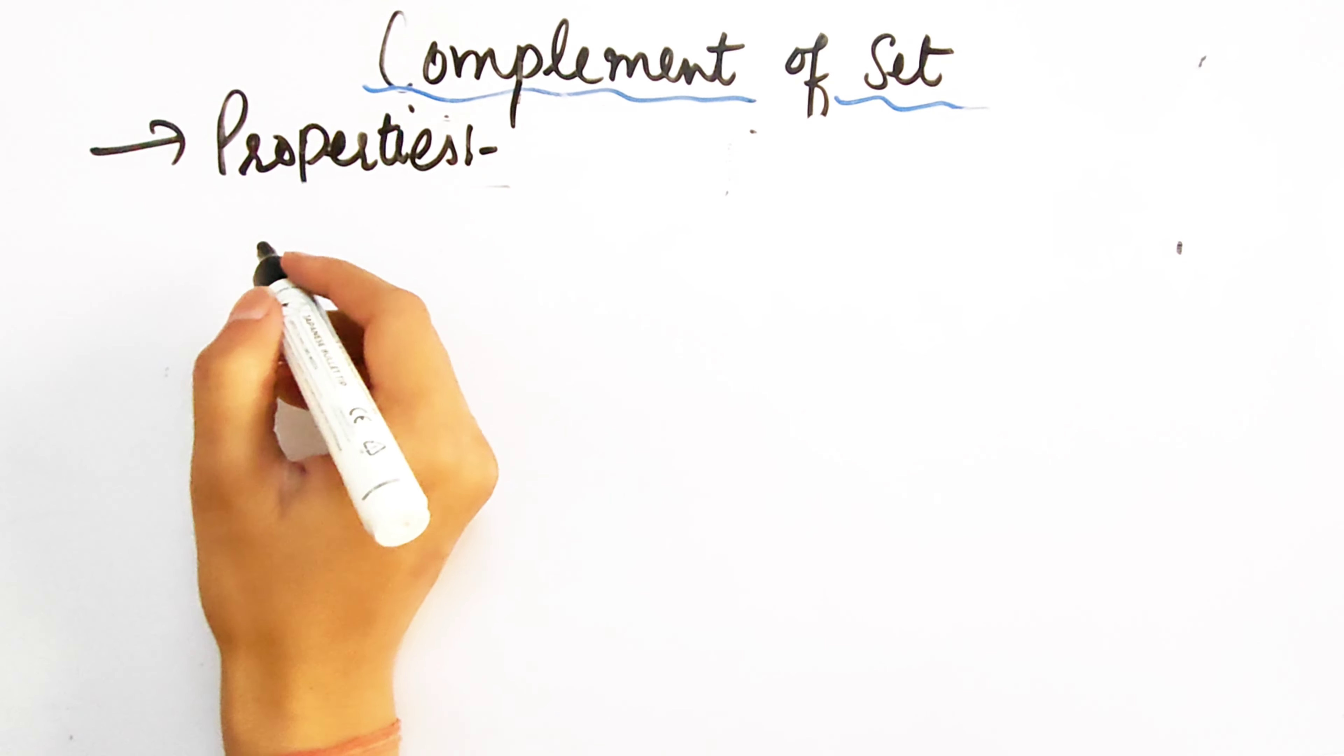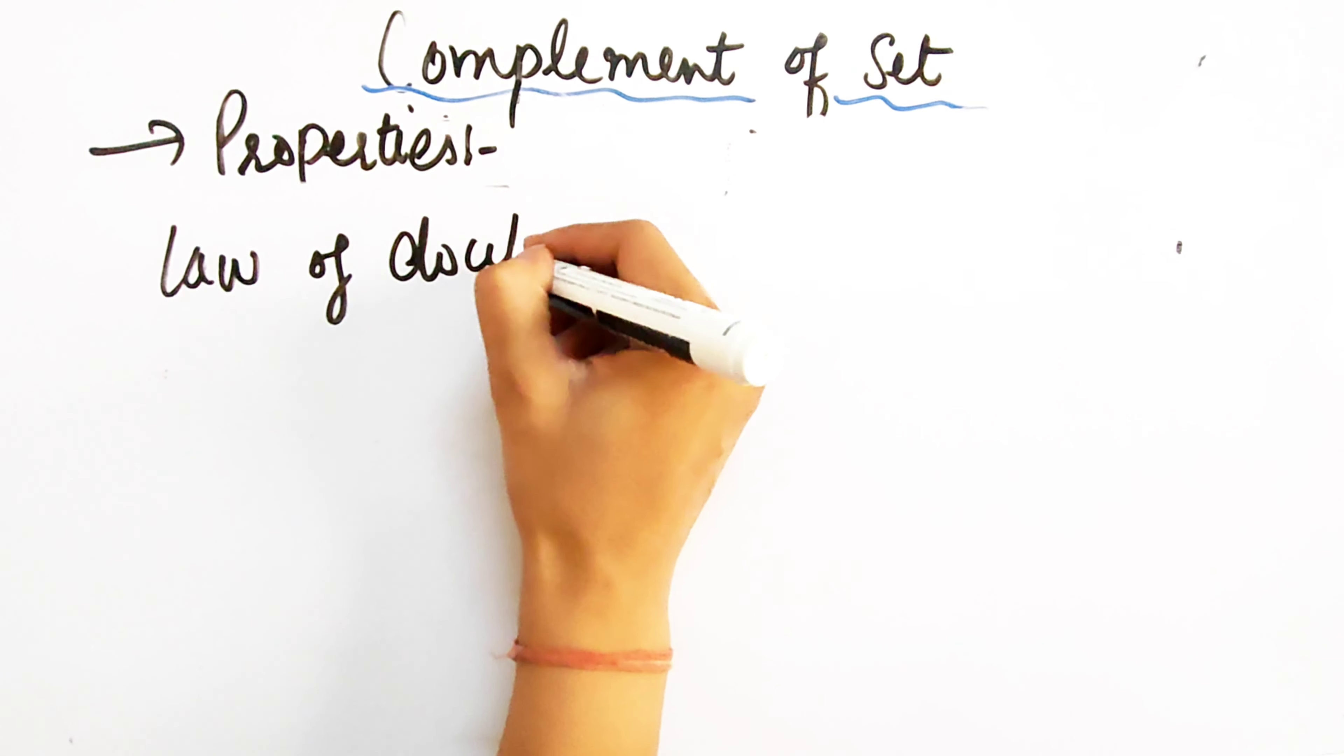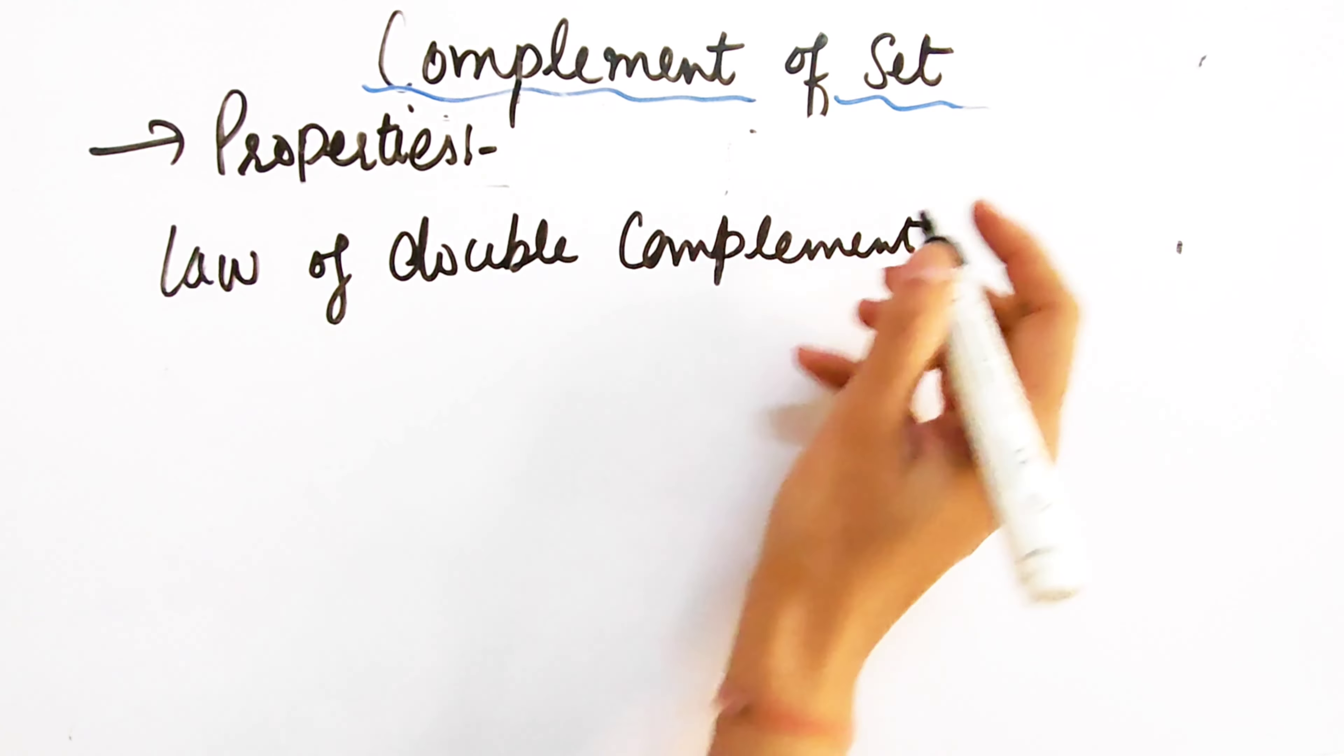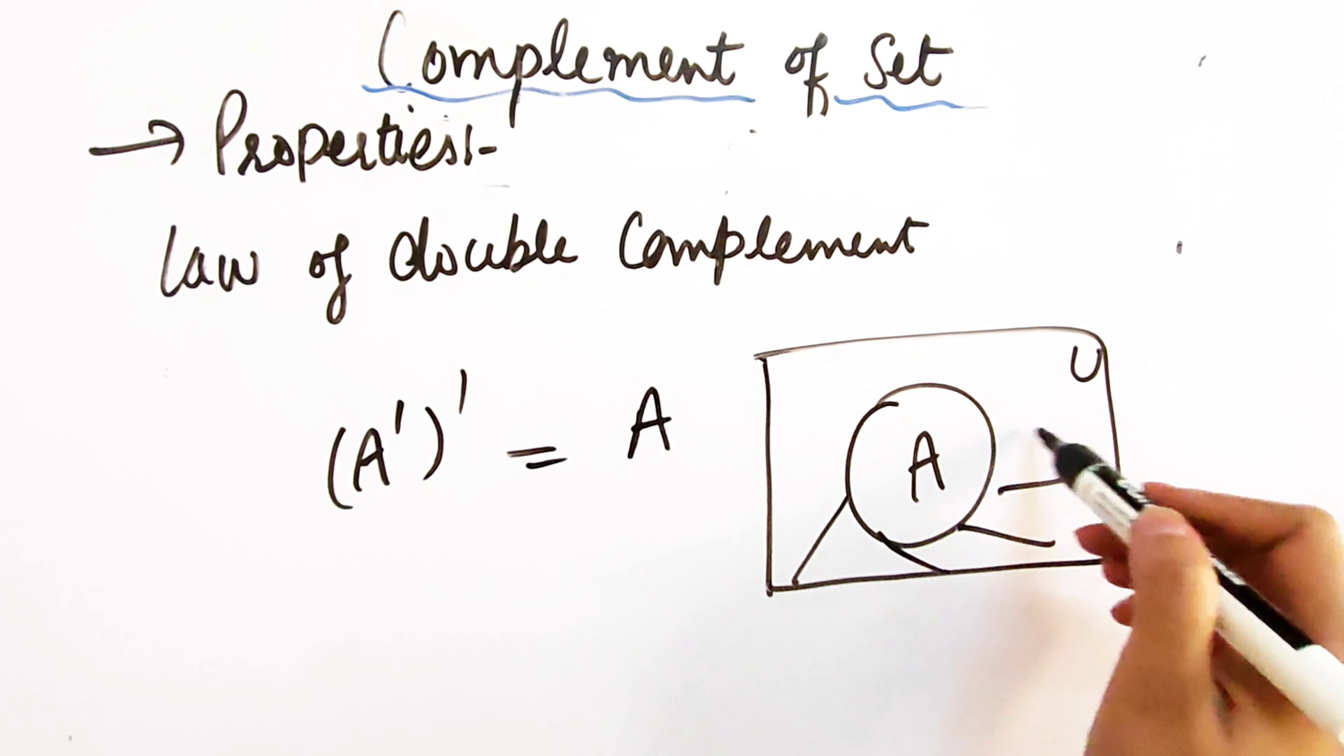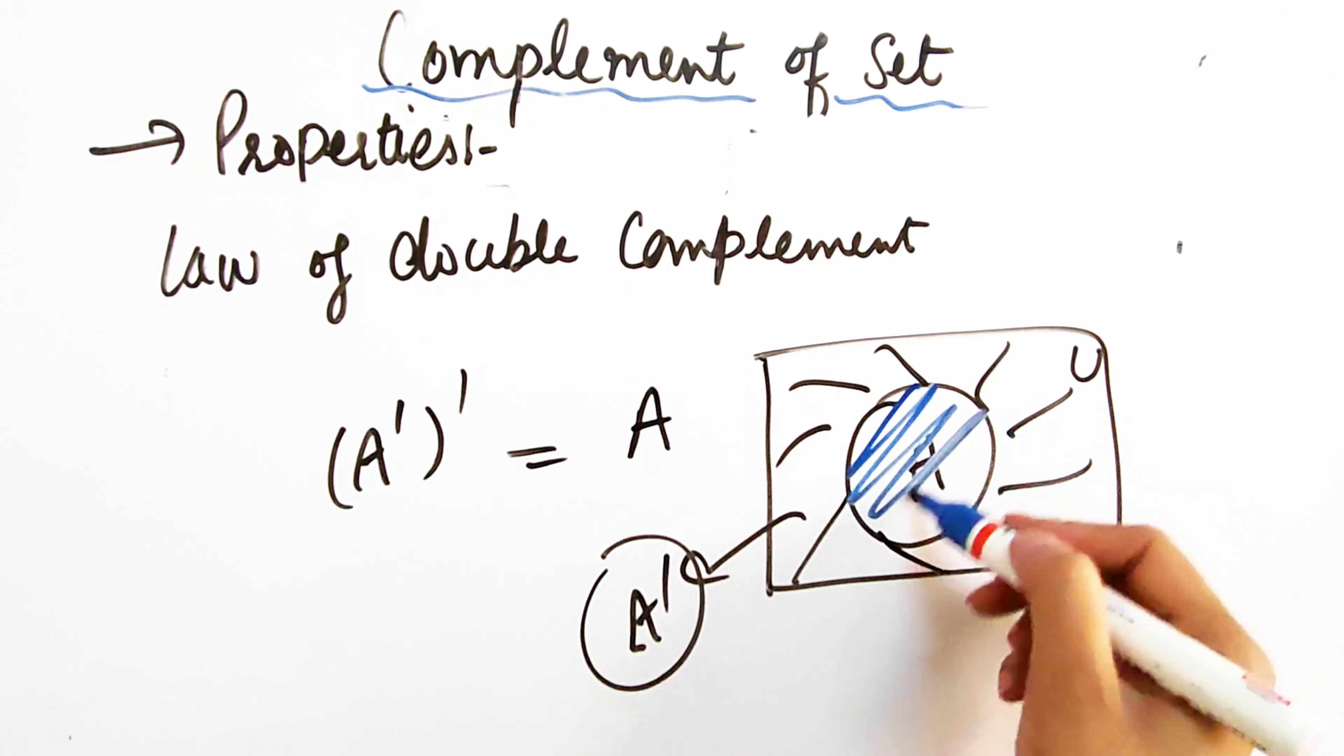The next law is law of double complement. What is double complement? If I complement one complement, then it will come back. You can understand it from the help of double complement. What was the complement? The second portion of the portion. I have one complement, if I want to remove the complement, then leave the portion of the portion, what will change? The second portion of the portion of the portion. What will come back? A will come back.